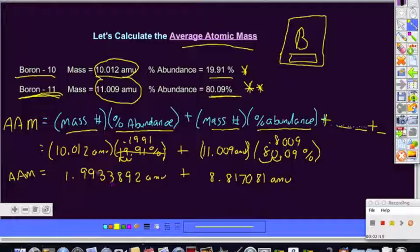If we're looking at significant figures, 1, 2, 3, 4, 5 sig figs times a value of 4, we're going to keep 4. 1.993 and we'll avoid the others. 8.817 will be our 4 sigs that we're going to keep here.